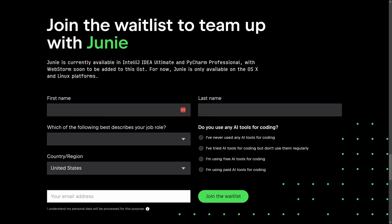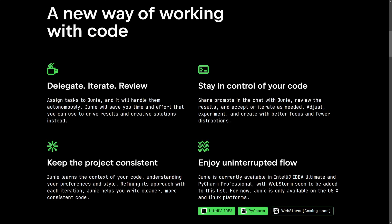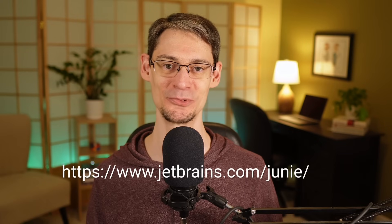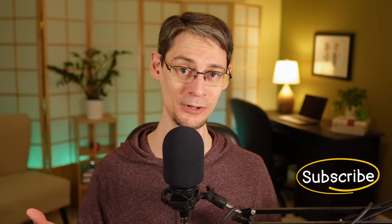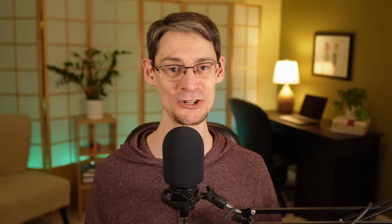If you're up for taking Junie for a spin, there are a few things to keep in mind. First, it's still in early access, but you can join the waitlist at jetbrains.com/junie. You're also going to need IntelliJ IDEA Ultimate or PyCharm — support for WebStorm is coming soon. And finally, at the moment you're going to need either a Mac or a Linux machine — I'm guessing that's because of all the terminal commands that Junie runs, and those commands are just going to be different for Windows. I hope you get a chance to try out Junie soon. Thanks for watching — if you enjoyed it, click the like button and subscribe. Thanks so much for hanging out with me today and I'll see you next time.